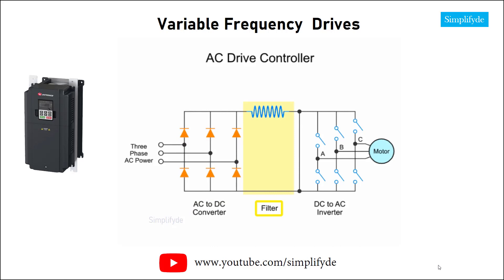This stage of the wave conversion serves to stabilize and smooth the pulsating rectifier output to generate a constant DC voltage. The filtered DC bus voltage then passes through to the inverter.